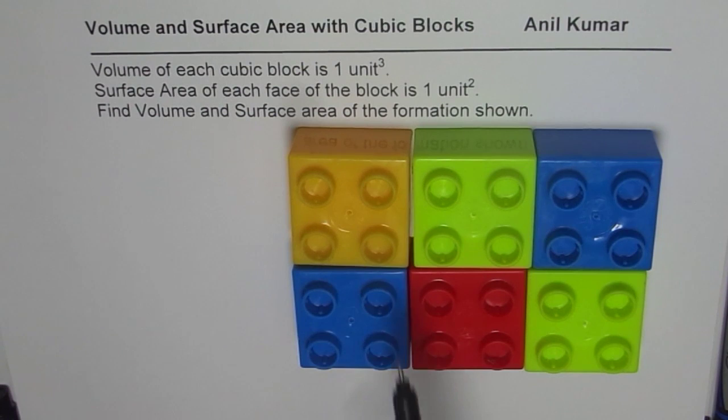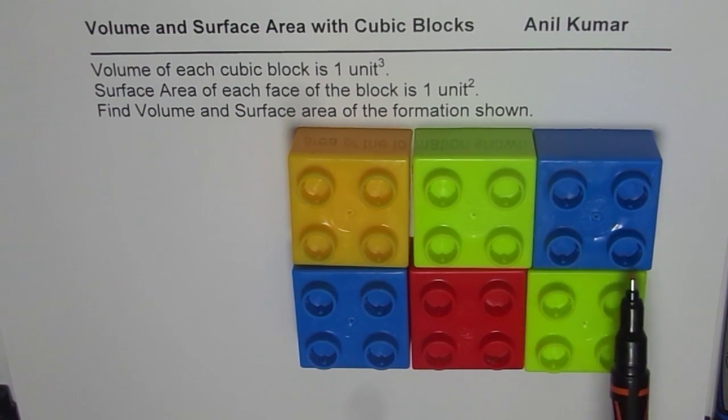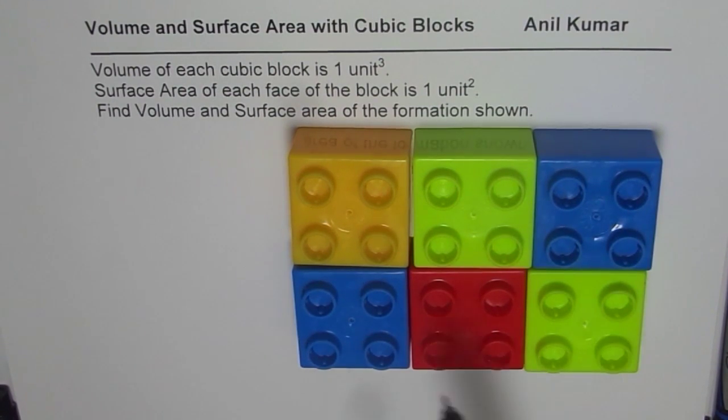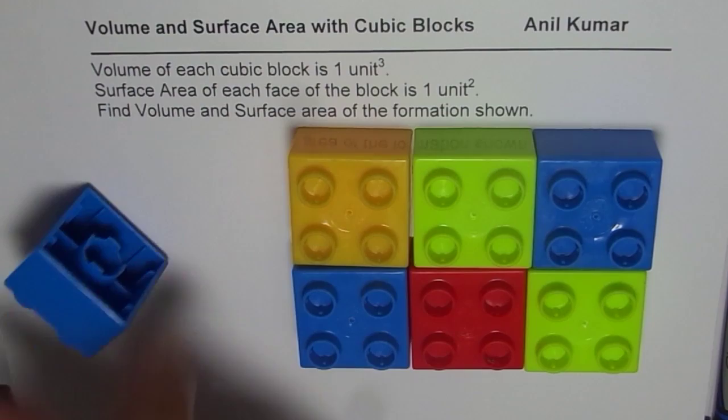We have six cube blocks here: 1, 2, 3, 4, 5, 6. Volume of each is one unit cube and the surface area—area of one face I should say—is one unit square.